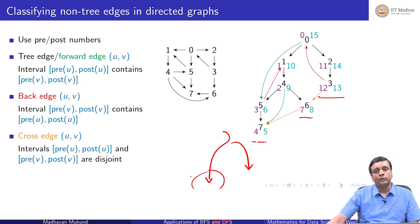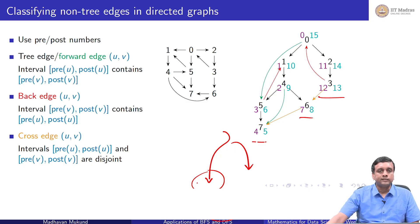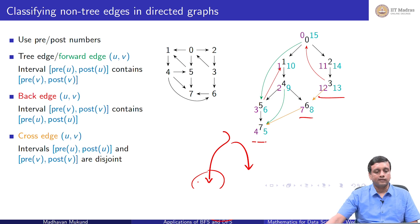This is how we use pre and post numbers to discover which non-tree edges are back edges, and therefore decide whether a directed graph has a cycle.